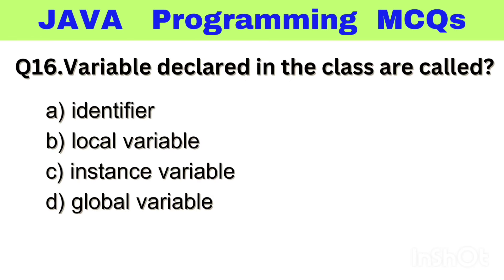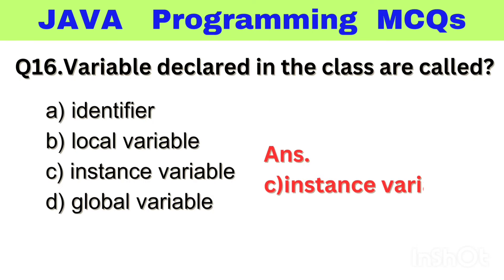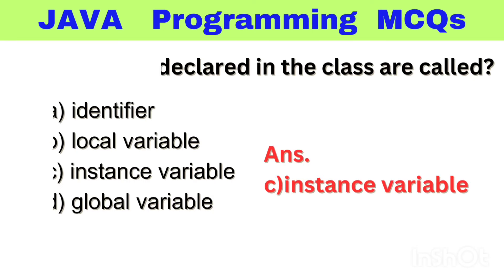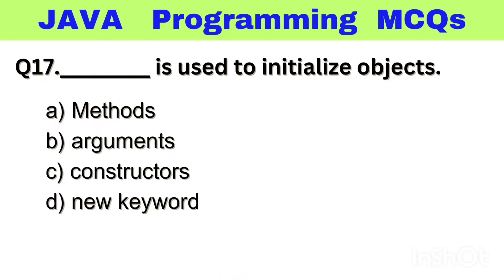Question number 16. Variables declared in the class are called dash. Option A: Identifier, B: Local Variable, C: Instance Variable, D: Global Variable. The right answer is option C, Instance Variable.